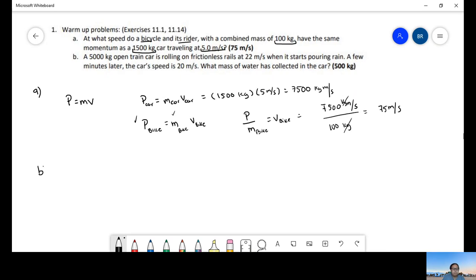Now for part B, we have a 5,000-kilogram open train car rolling on frictionless rails at 22 meters per second. Then it starts pouring rain. A few minutes later, the car speed is 20 meters per second. What is the mass of the water collected by the car?